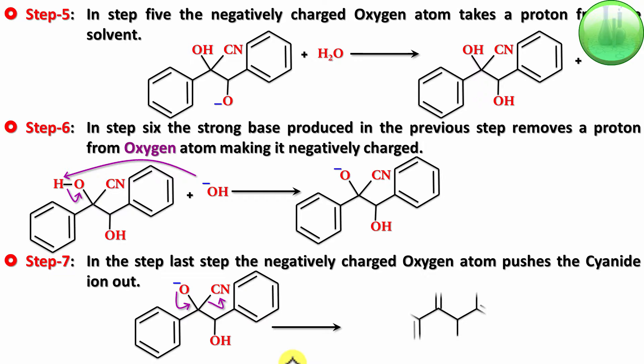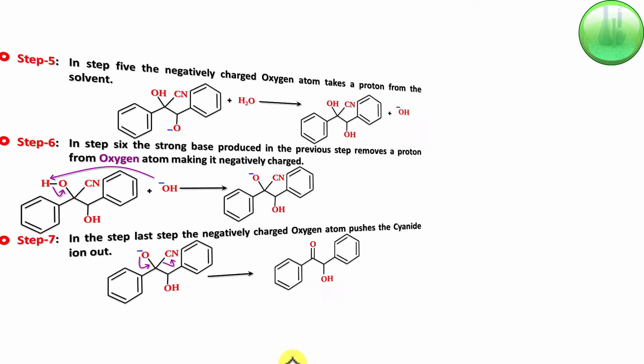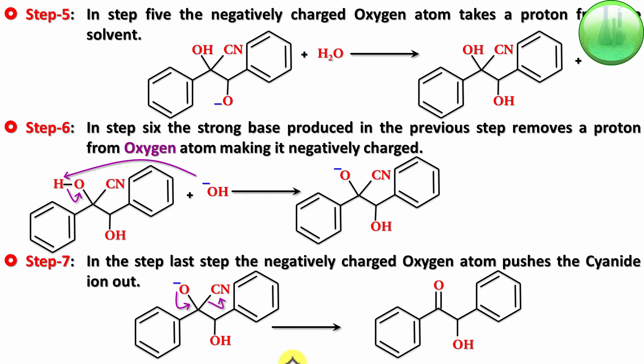It is not necessary that both molecules be of the same type — different aromatic aldehydes can be used, giving cross benzoin products. An important observation: the carbon on which the cyanide originally attacked is the one that finally becomes the carbonyl carbon (C=O) in the product. So whichever benzaldehyde the cyanide attacks first, that carbon ends up as the ketone carbonyl in benzoin.